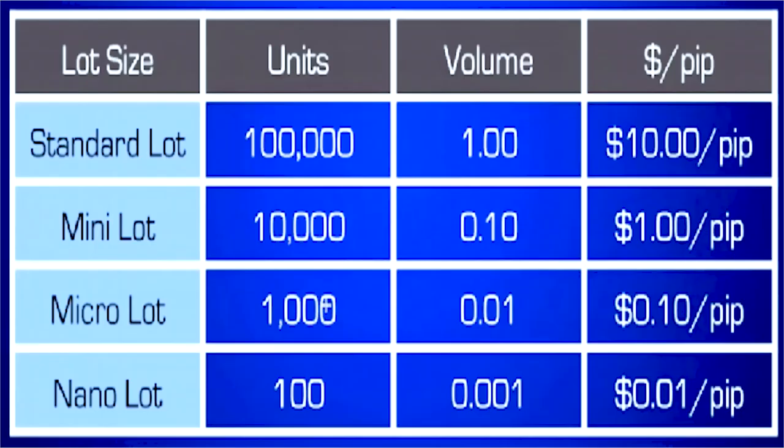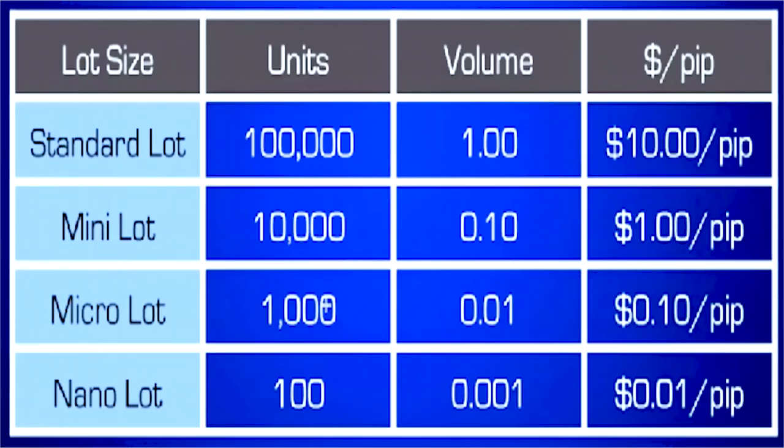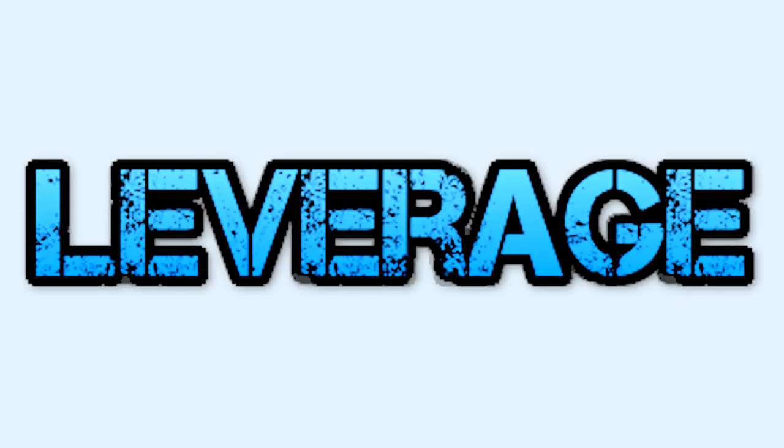In forex, trades are usually made in lots. A standard lot is 100,000 units of a currency, but there are also mini lots which are 10,000 units, and micro lots which are 1,000 units. This is where leverage comes into play. Leverage allows you to control a large position with a relatively small amount of money — it is like putting a small down payment on a house to control the entire property.